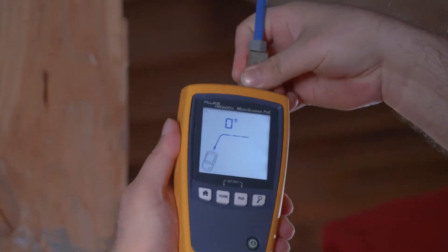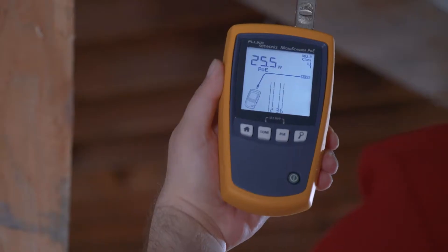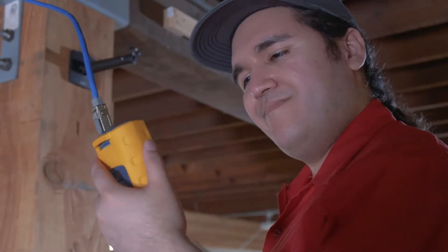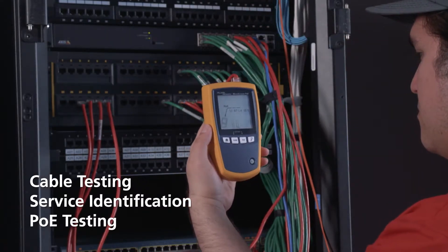The Microscanner PoE integrates three functions to help you install and troubleshoot PoE and non-PoE devices on your network, including cable testing, service identification, and PoE testing.